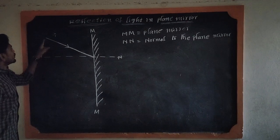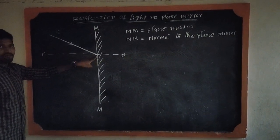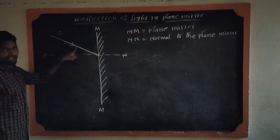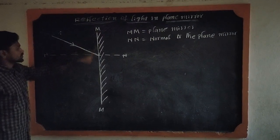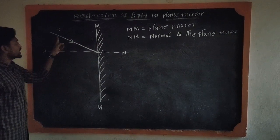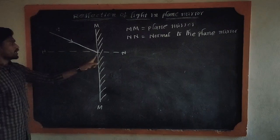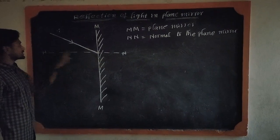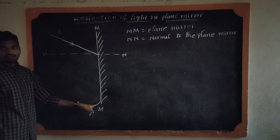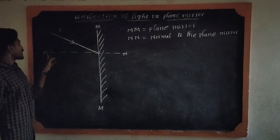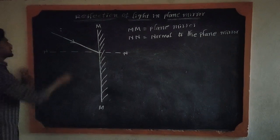The light ray moves towards the mirror — such a ray is called an incident ray. Always, the incident ray moves towards the mirror. When the light ray hits the mirror, the incident ray forms a normal. The normal is always perpendicular to the surface and perpendicular to the plane mirror.